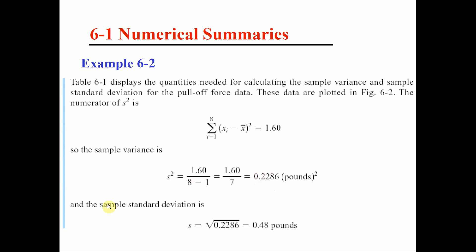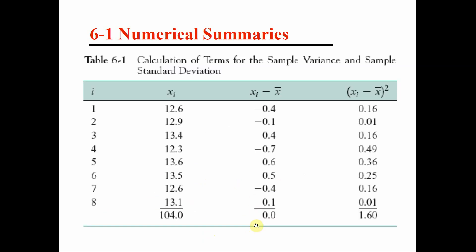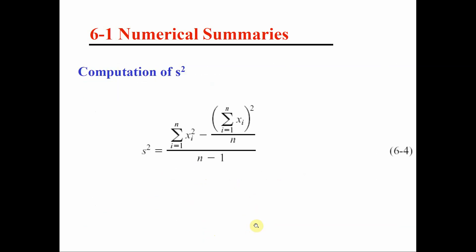If s-squared is the sample variance, then the sample standard deviation s is simply the square root of s-squared, which equals 0.48 in this example.